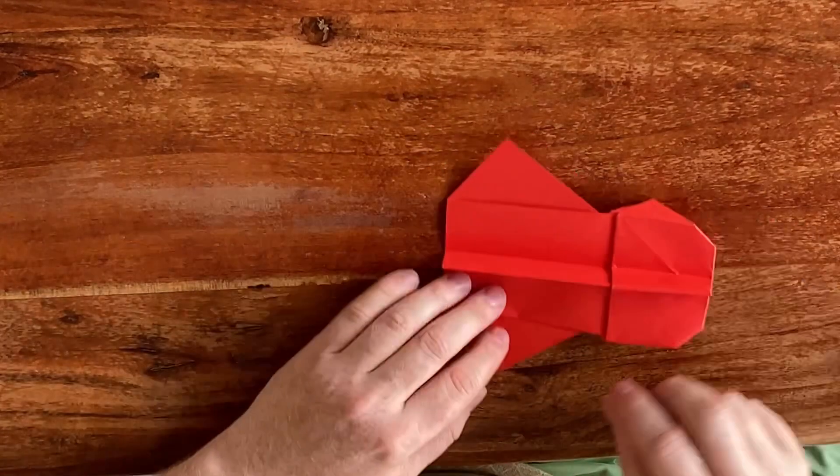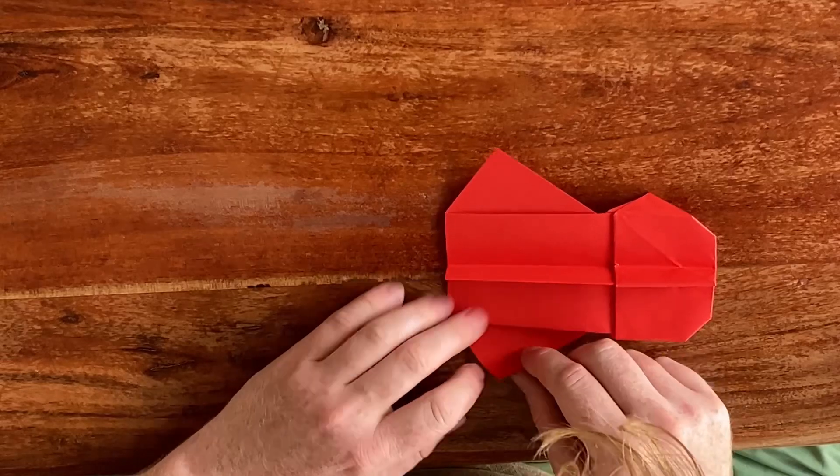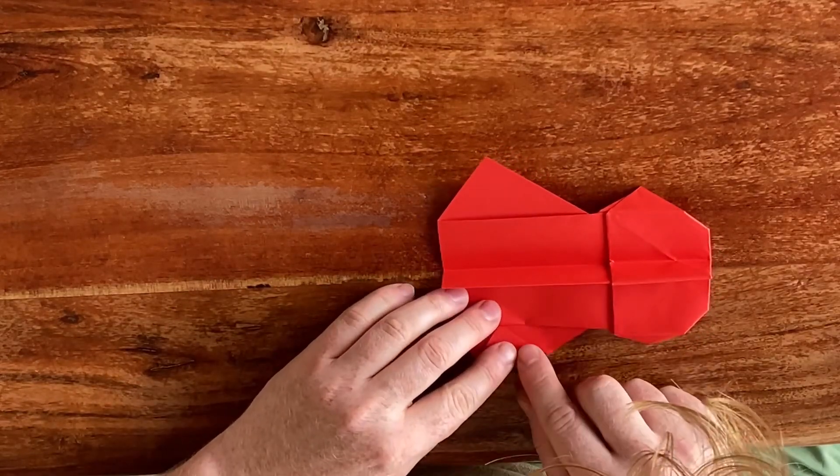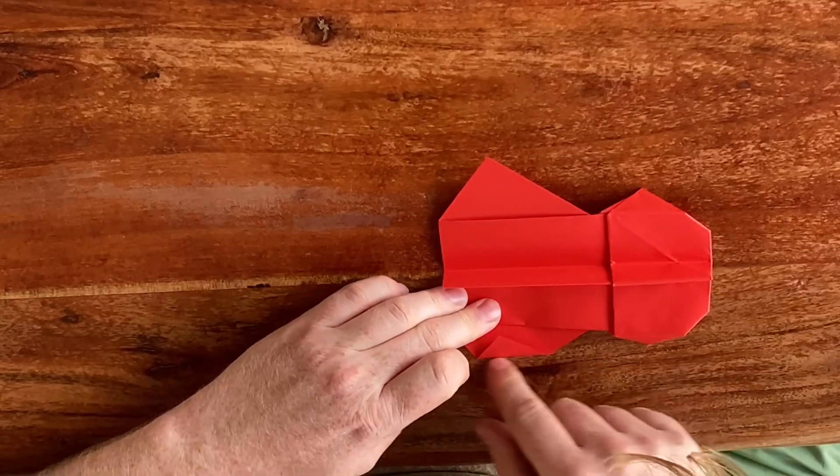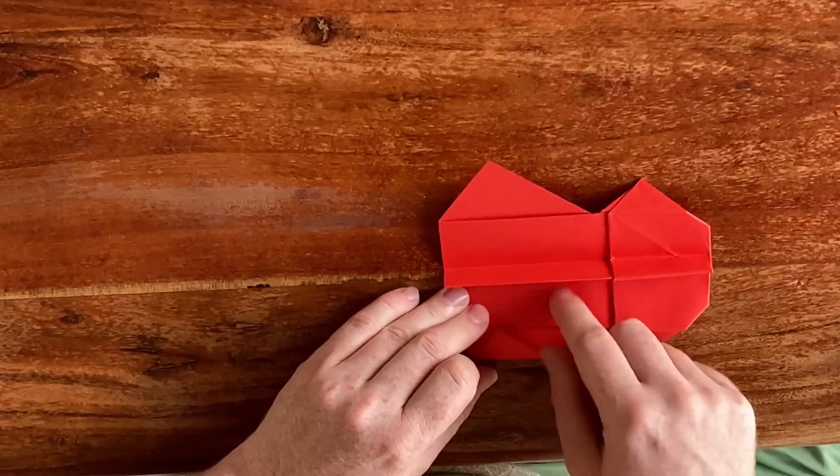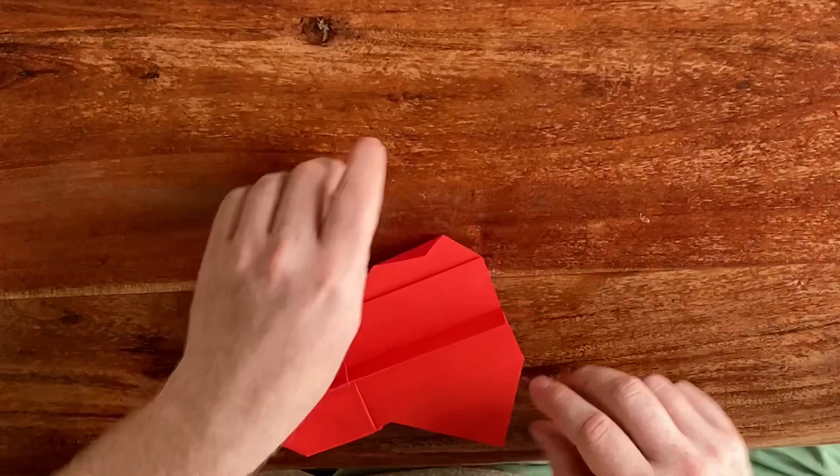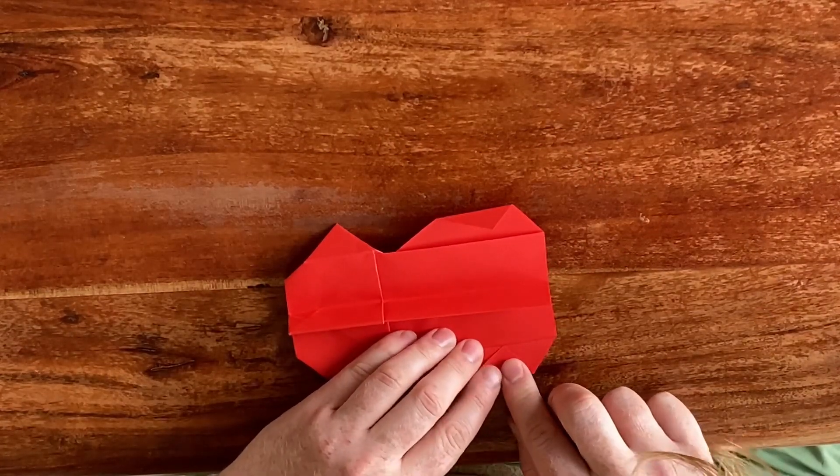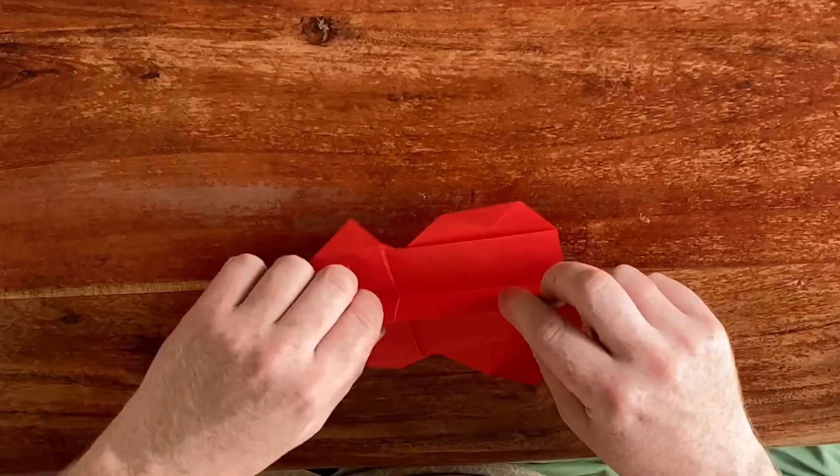Then on the wings you want to fold down. You want to bring this tip towards this edge and try to have this crease parallel towards the center of the plane. Do the same on the other side. The plane is finished.